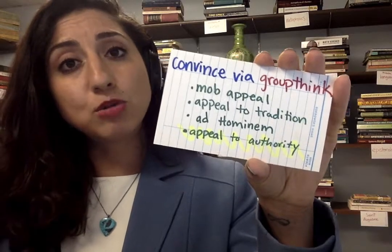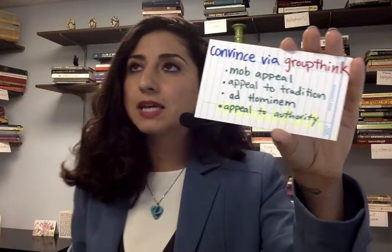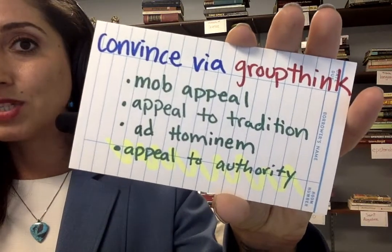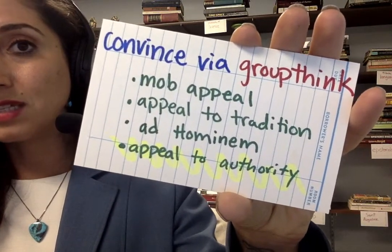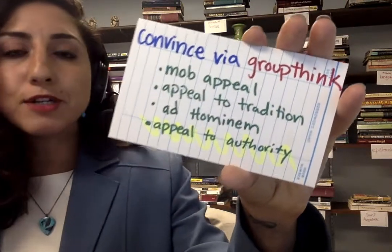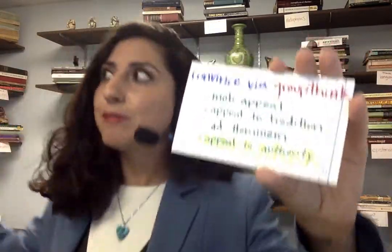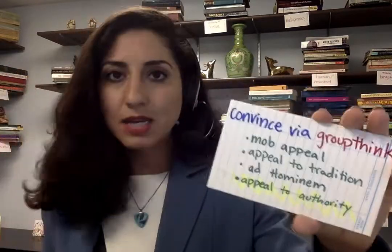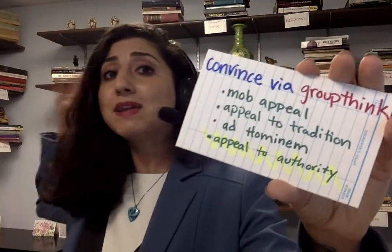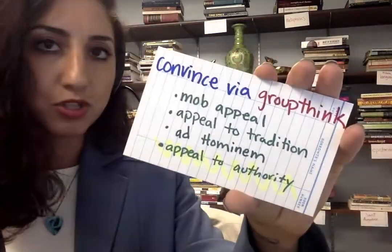That's appealing to emotion. We can also convince somebody via groupthink — appealing to the population and the psychological need to fit in and not stand out. Examples of groupthink fallacies include mob appeal: "Hey, everybody's doing it, why aren't you? You should do it too," or "Everybody thinks this, why don't you think it too?" There's also appeal to tradition: "We've all been thinking this, this is how we've been doing it."